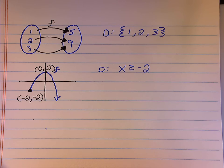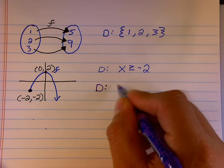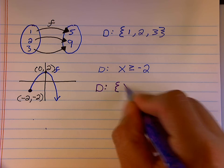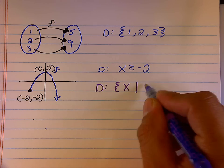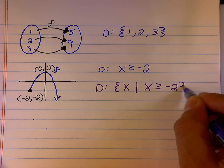Now our new notation, and that's what you're going to be tested on for this first exam, you would write it this way. The domain is the set of x where x is greater than or equal to negative 2.